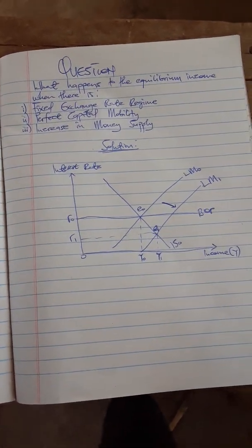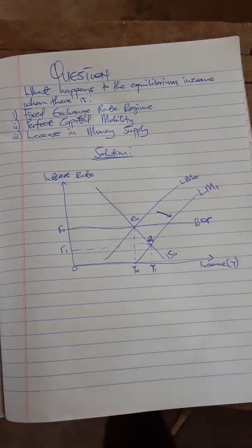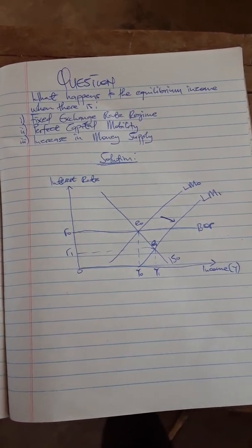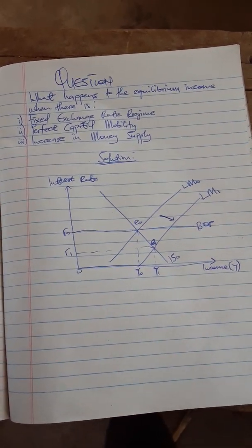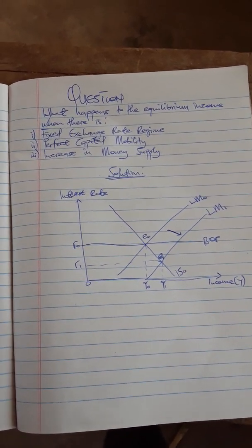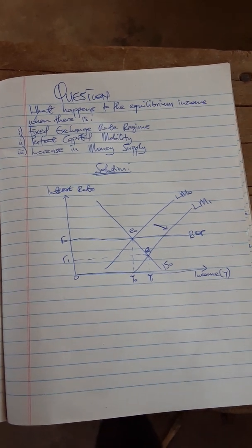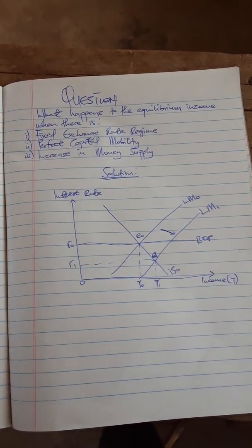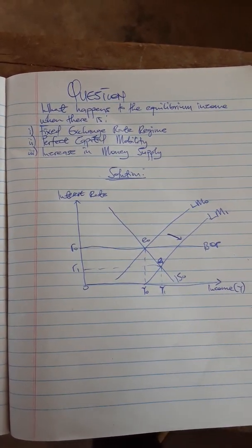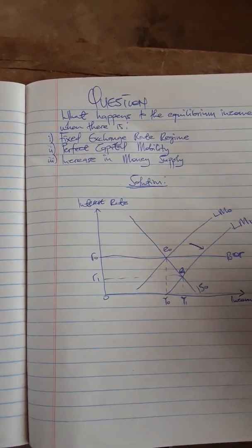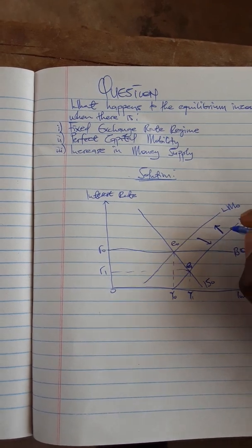At point E1 it is below the BOP, and for that matter there is a deficit of foreign currency — local investors need more foreign currency to invest outside, and importers also need more foreign currency to import goods to supplement excess demand due to the increase in income locally. Since it is a fixed exchange rate regime, the government needs to step in. The government will sell foreign currency to the people and take back local currency. When the central bank sells foreign currency it takes local currency, causing the money in the local market to reduce.